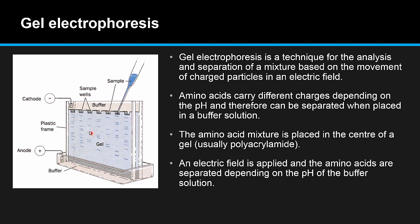If the amino acids are positively charged, they'll be attracted to the cathode. If the amino acids are negatively charged, they'll be attracted to the positive anode. So it depends on the pH of the buffer solution to determine if the amino acid is positive or negative. Remember, at the isoelectric point, the amino acid will not move in an electric field.